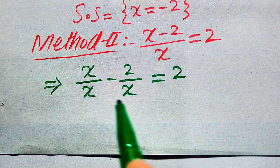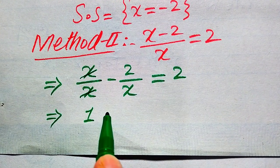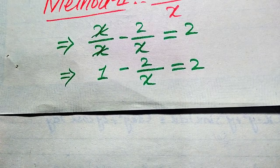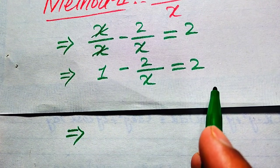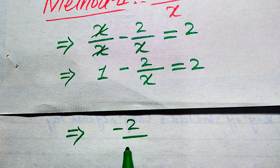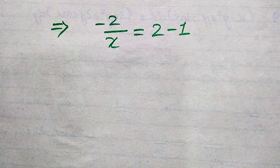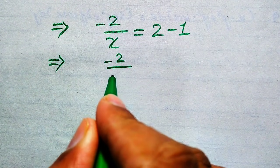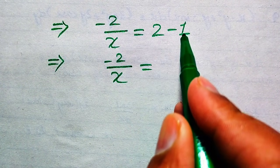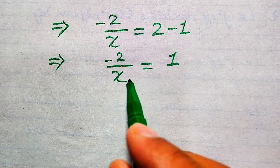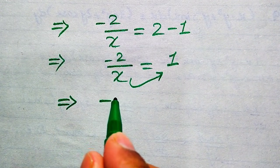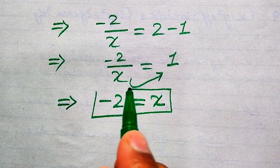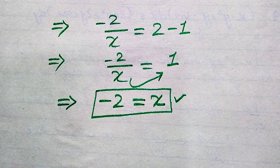The X in the numerator and the X in the denominator cancel, leaving 1 minus 2 over X equals 2. Moving the 1 to the right-hand side it becomes negative, so minus 2 over X equals 2 minus 1, which equals 1. Moving X to the right-hand side gives minus 2 equals X times 1, so X equals minus 2. In the second method we again get the one root: X equals minus 2.